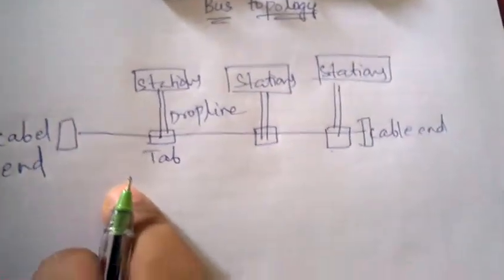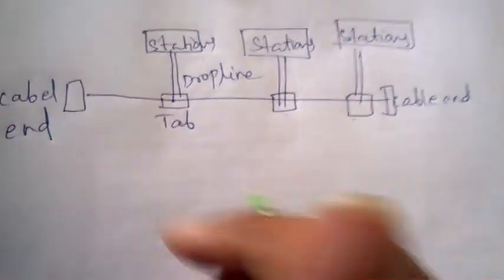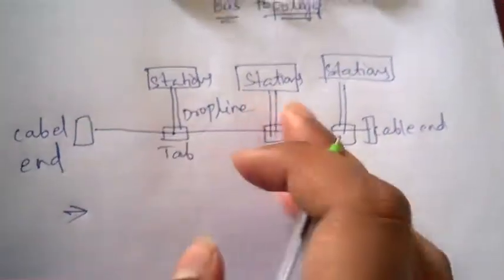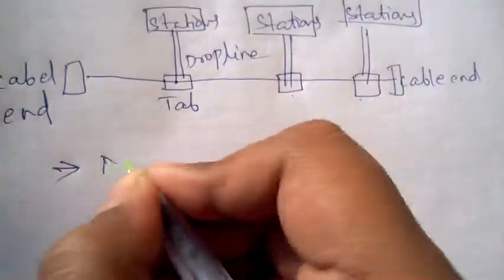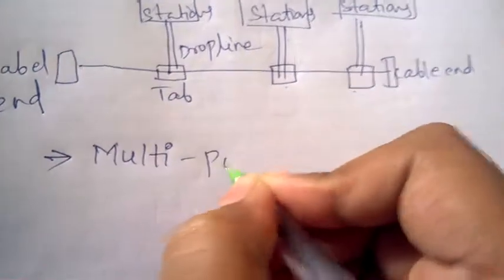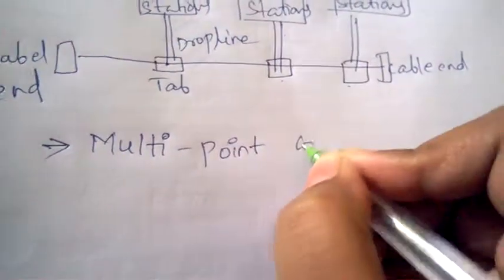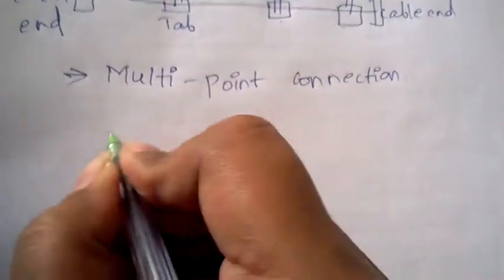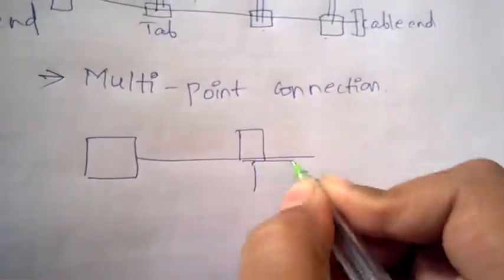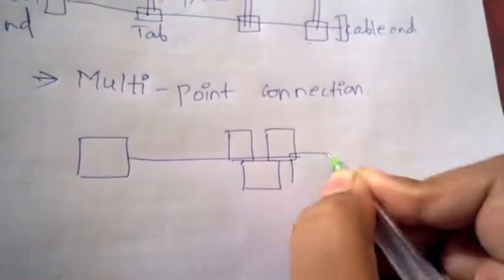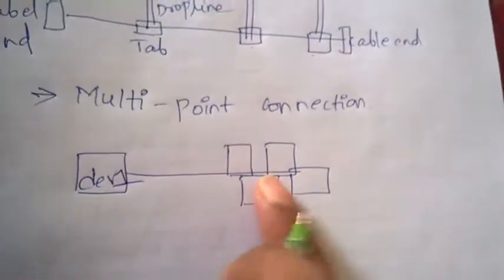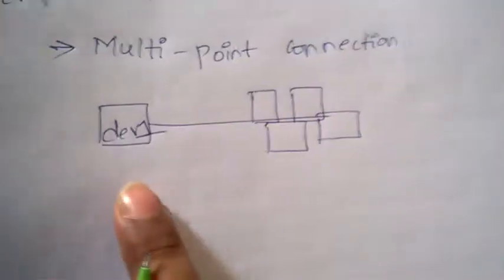Now let's discuss about bus topology. Bus topology is a multi-point connection. Multi-point connection means one device will be connected to more than one device. This device is connected to multiple devices, so this is called the multi-point connection.